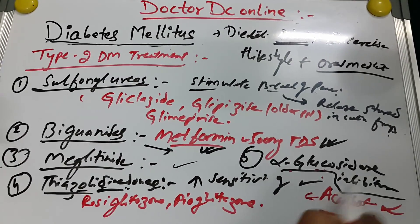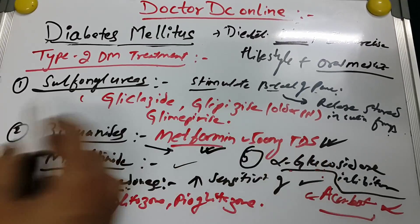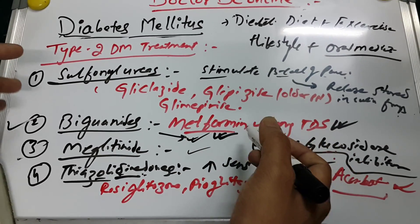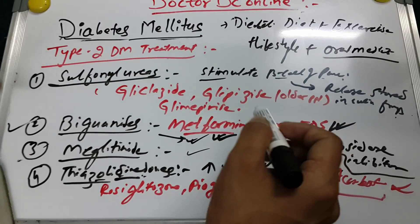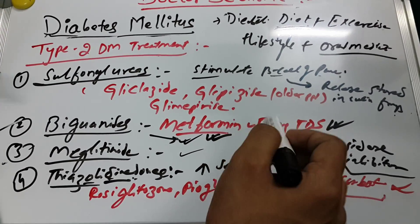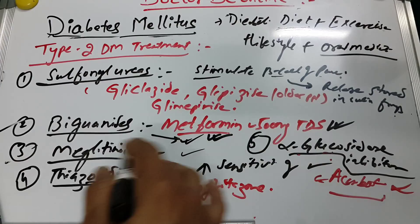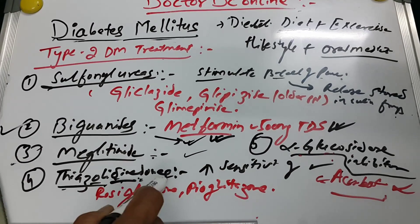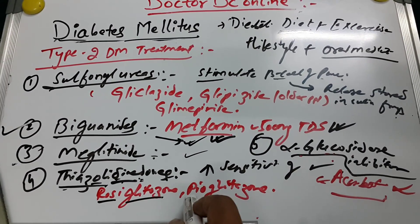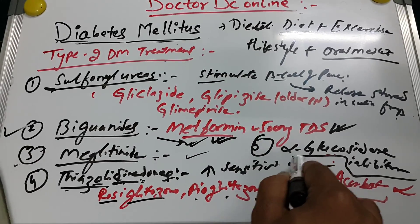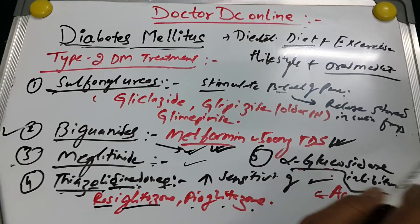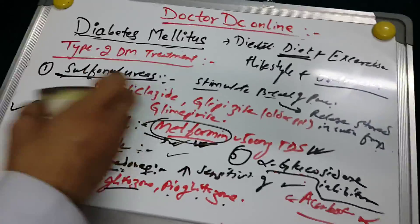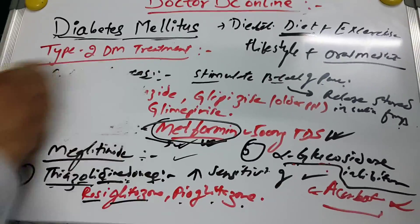Among all five groups, biguanides — metformin — is most important to remember. Its main mechanism is increased peripheral utilization of glucose and decreased hepatic gluconeogenesis. The other groups are sulfonylureas, meglitinides, thiazolidinediones (rosiglitazone and pioglitazone), and alpha-glucosidase inhibitors (acarbose). But the primary focus is metformin.